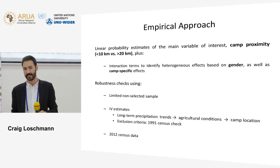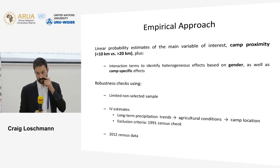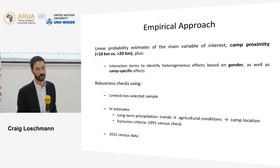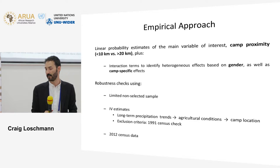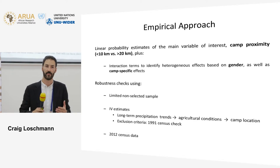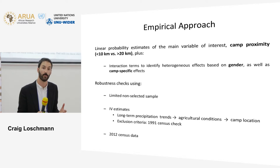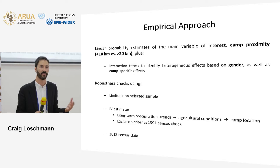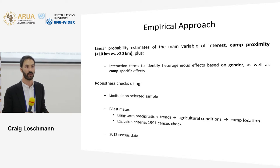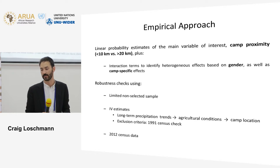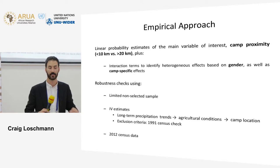The 10 and 20 kilometer decision stemmed from the literature, discussions with other researchers familiar with this context, and practical considerations. When we talked to people about where refugees were interacting with local host communities, they always said it was within local markets. Given the lack of much public transportation — most people get around by foot or bicycle — most interaction would happen within a 10 kilometer area, whereas interaction beyond a 20 kilometer radius was much less likely.